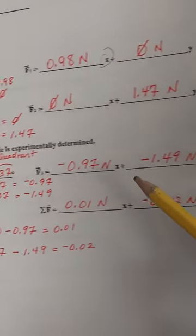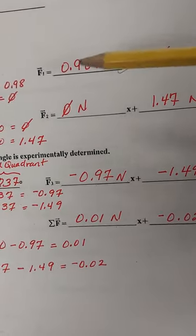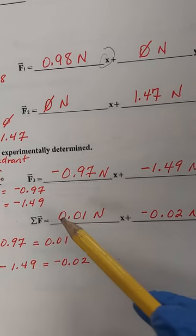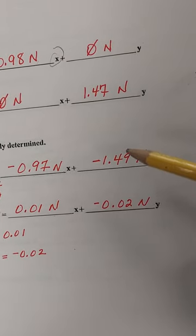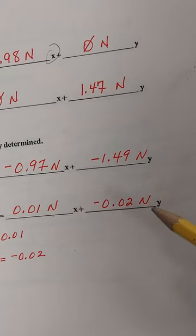And then for the third force in the y direction is 0.182 times 9.8 times the sine of 237, which gives us negative 1.49 newtons. So you add these force vectors and end up with 0.01 newtons.